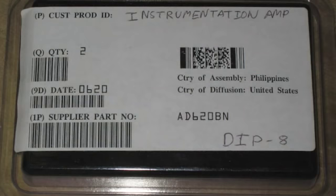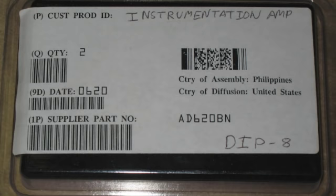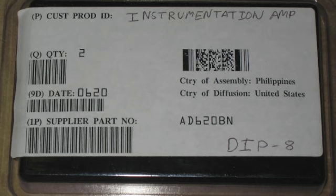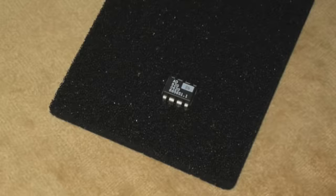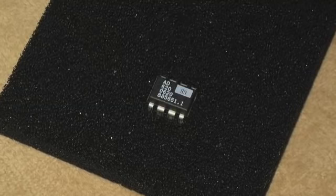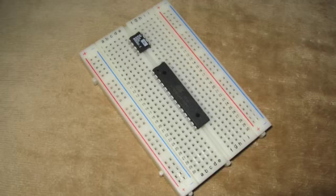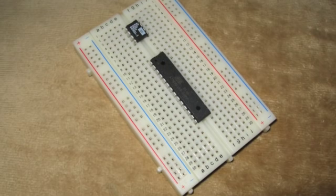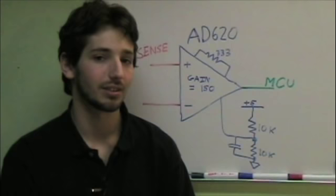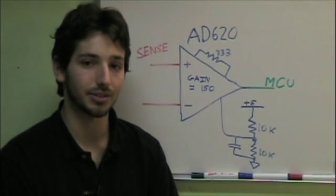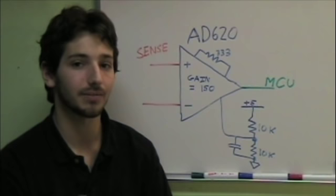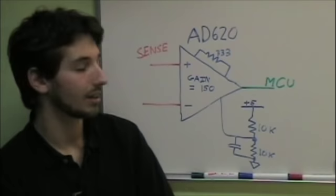We decided to use a chip from analog devices called the AD620. This can amplify a very small differential voltage, and we set it up to amplify by 150. We got this part when analog devices was giving free samples to engineers and hobbyists, but at this point you can find them from normal electronic suppliers online. The AD620 is very easy to use and can plug right into the breadboard along with the normal NerdKits parts. This part uses two resistors to create a voltage reference at 2.5 volts for the amplifier. This other resistor sets the gain of the amplifier. The output goes right into the microcontroller.